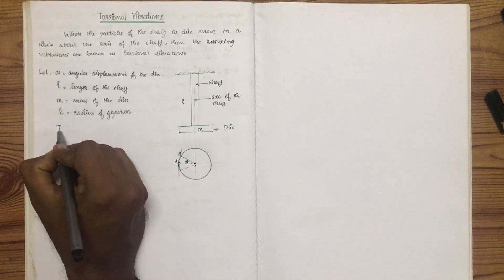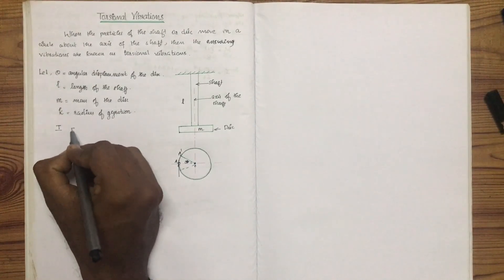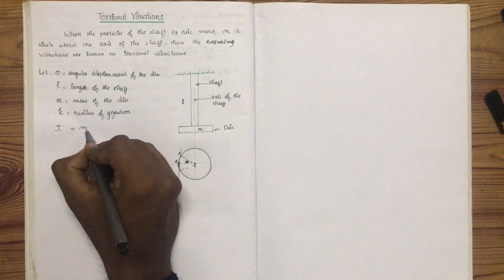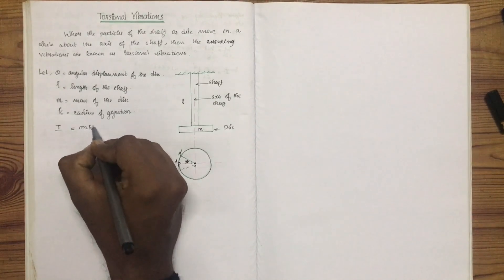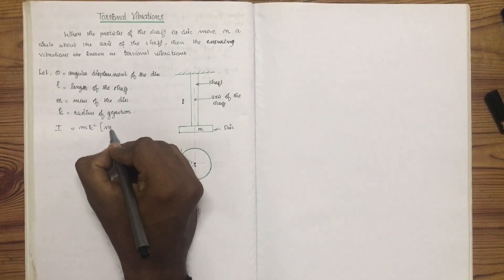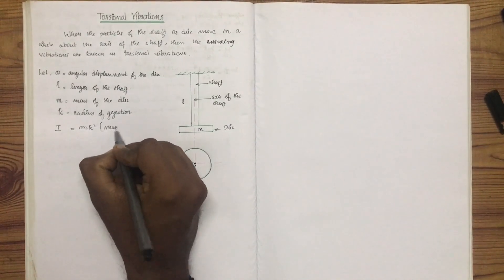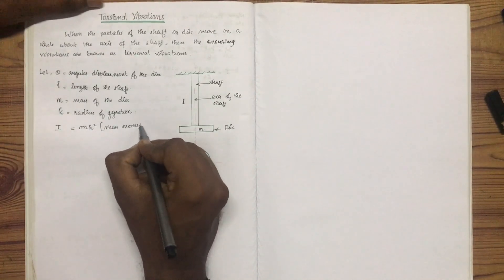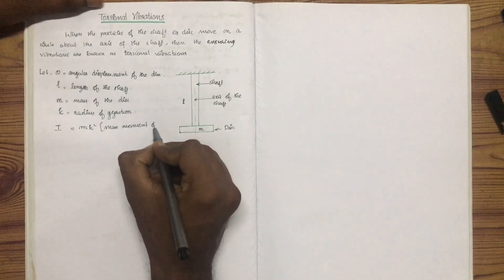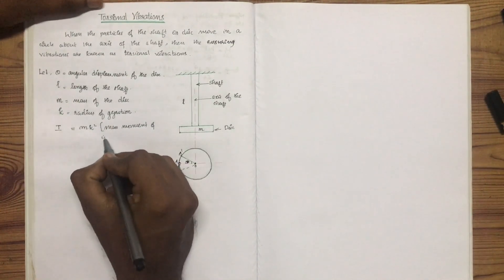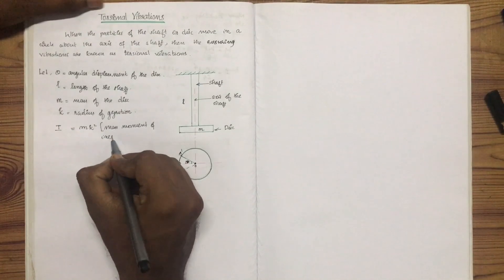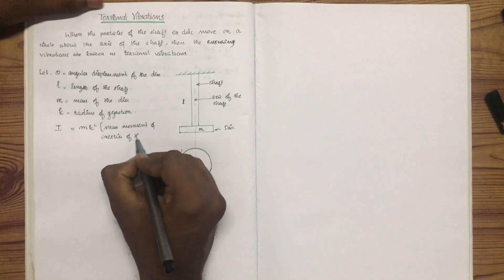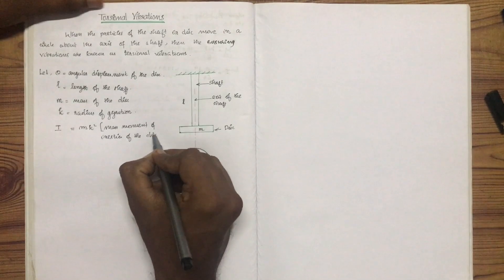We have the mass moment of inertia I, which is equal to mk², where m is the mass of the disk and k is the radius of gyration. This is the mass moment of inertia of the disk.